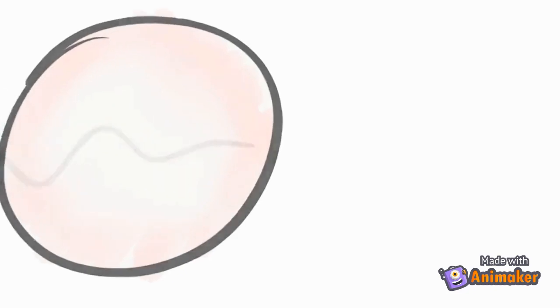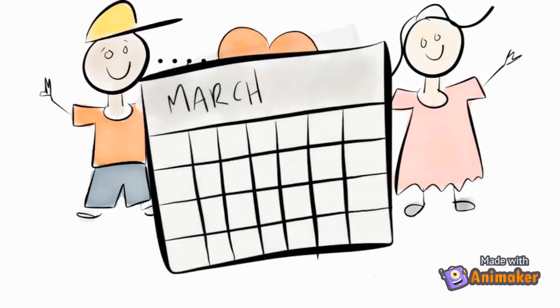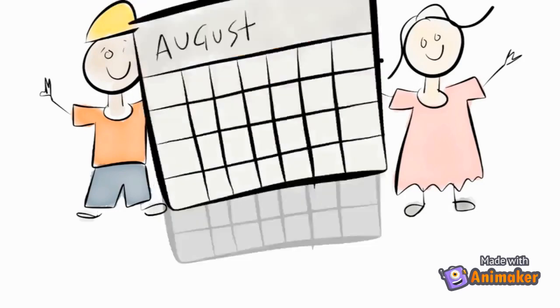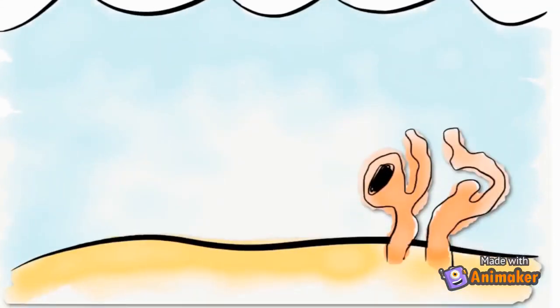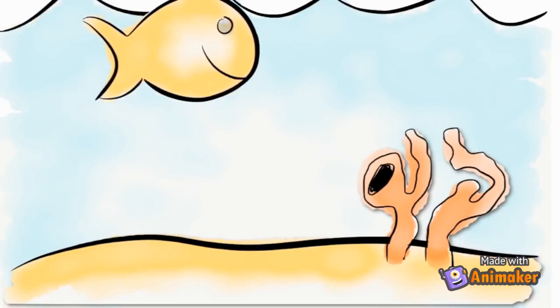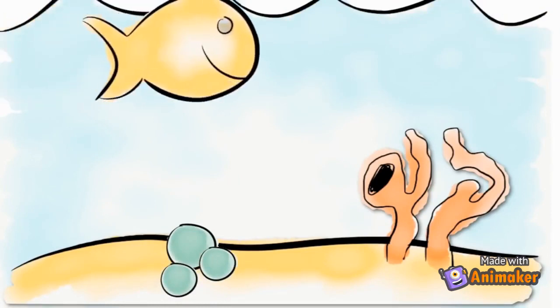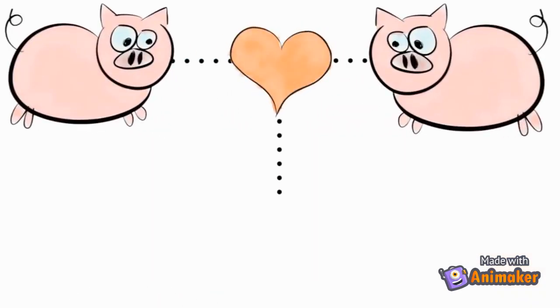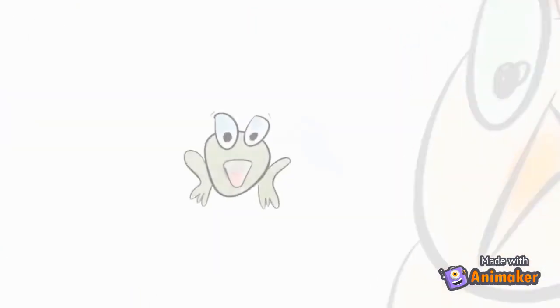Some animals, like humans, go through internal fertilization, where the egg is fertilized inside the body and the offspring develop inside the mother. Some animals, like fish, have external fertilization — the female releases her eggs, then the male fish spreads his sperm over her eggs, and the young develop outside of the body. No matter how the egg is fertilized, the offspring get some genes from each parent. Sexually reproduced offspring are not identical to either parent. So the next time you see an animal, think about where it came from and how it will make offspring.